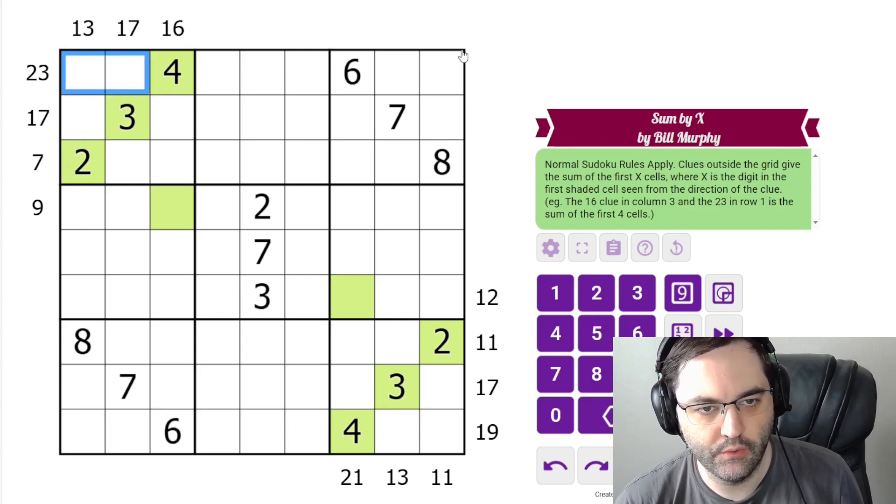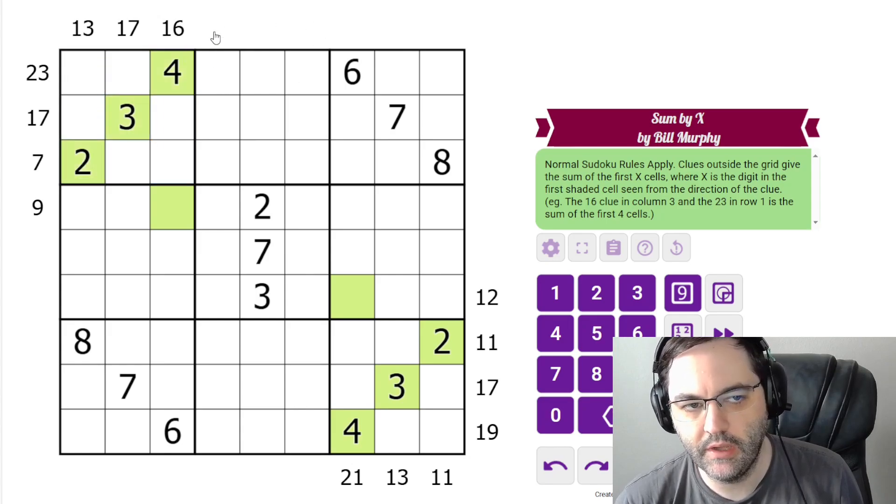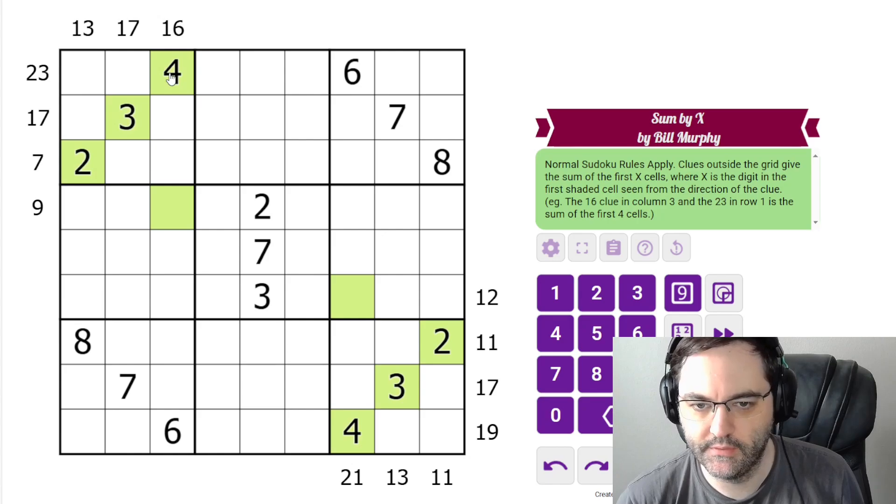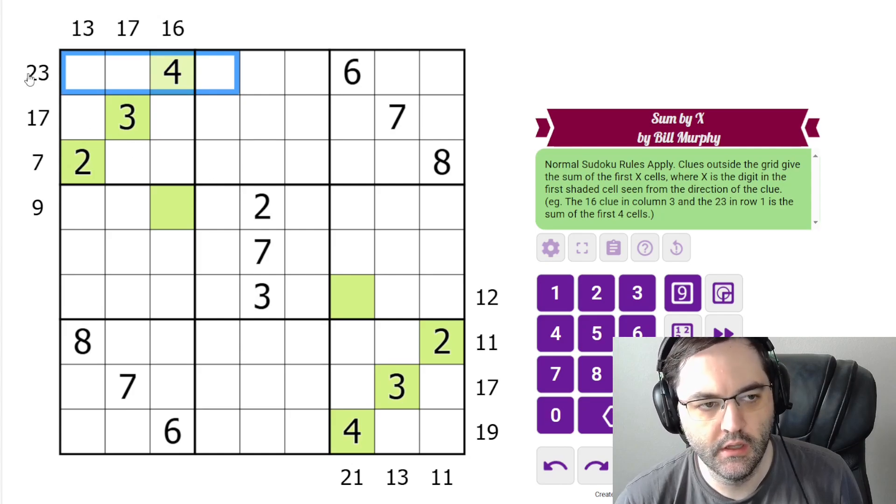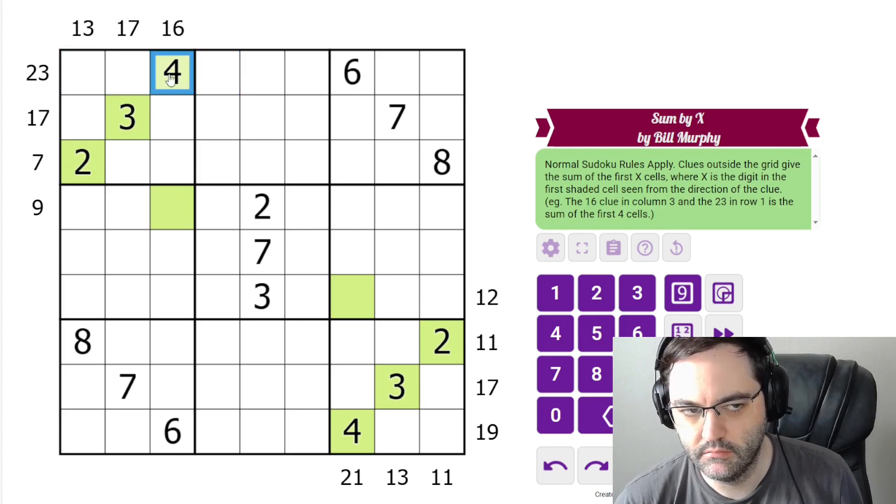We have normal set of rules, 1 to 9 in each row, column, and 3x3 box. Additionally we have some clues outside the grid and some shaded cells in the grid. The clues work like XSums clues. They give the sum of the first some number of digits away from the clue. The number of digits is in the shaded cell, the first shaded cell.